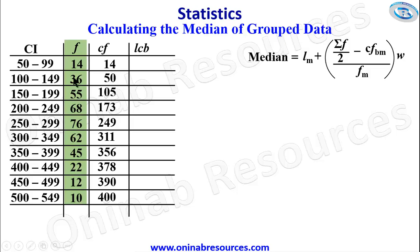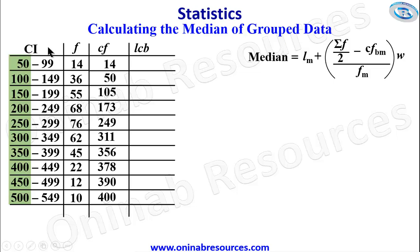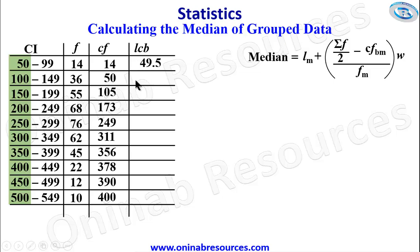Now we calculate the lower class boundary for each class interval. The lower class boundary is obtained from the lower limits of the respective class intervals. For the first class, assuming the upper limit of the previous class would be 49, we add 49 + 50 and divide by 2 to get 49.5. Similarly, 99 + 100 divided by 2 gives 99.5.